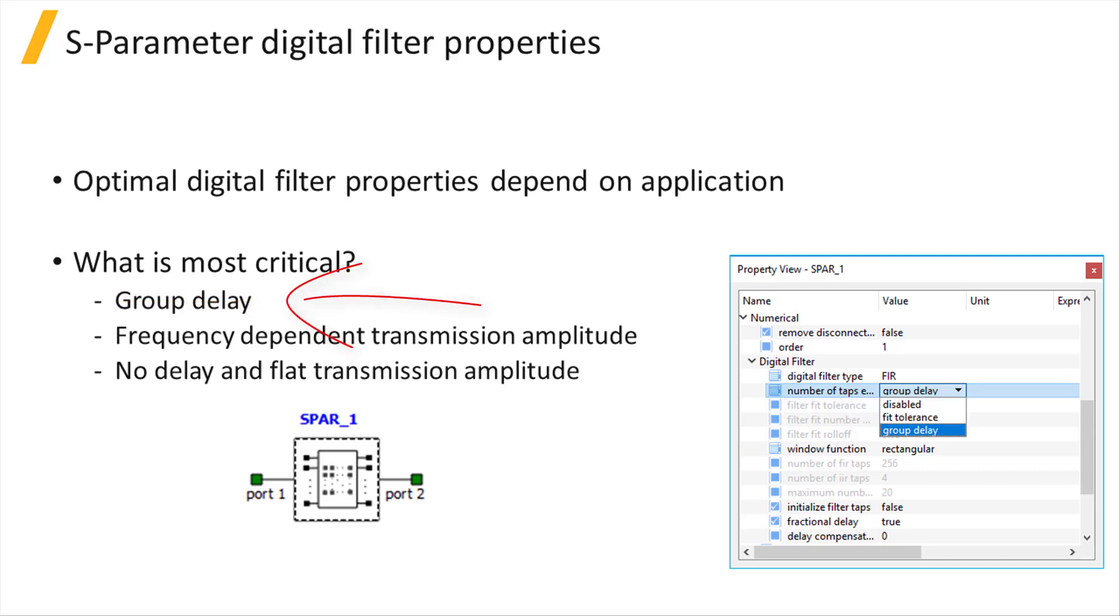Is it most critical that the group delay be accurate? Is it most critical that the frequency-dependent transmission amplitude be accurate? Or is this a frequency-independent element with zero group delay? The following will walk through these three cases and recommend digital filter settings.